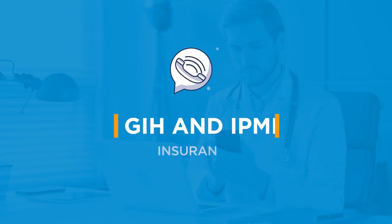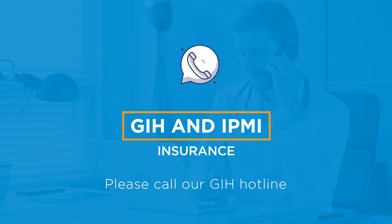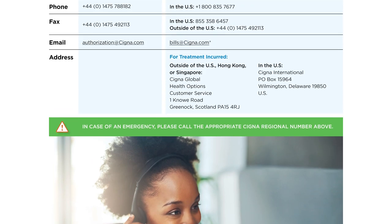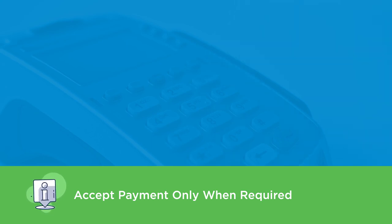For global individual health, please call our dedicated GIH hotline to obtain patient eligibility and GOP request for any Cigna ID reference number with a unique identifier that starts with number nine. To avoid reconciliation of your contracted amount versus a point-of-service payment, please do not accept payment from patients unless a payment is required by the patient's coverage and your provider agreement with Cigna.